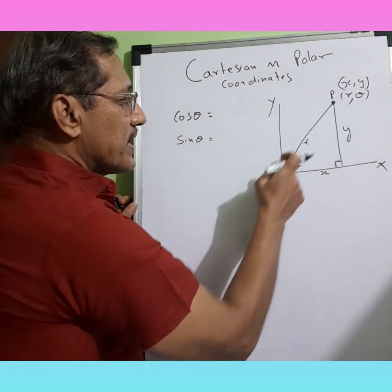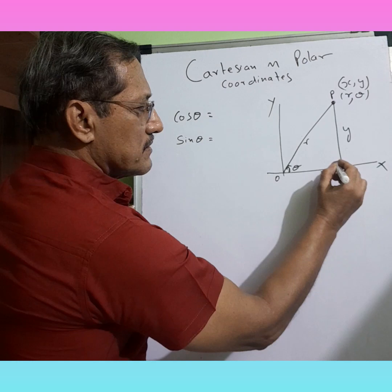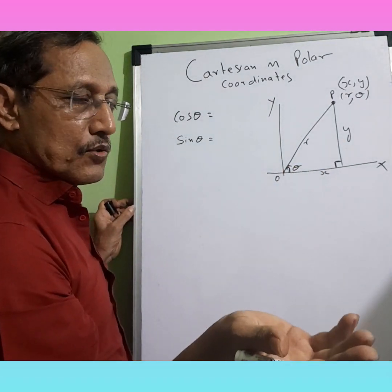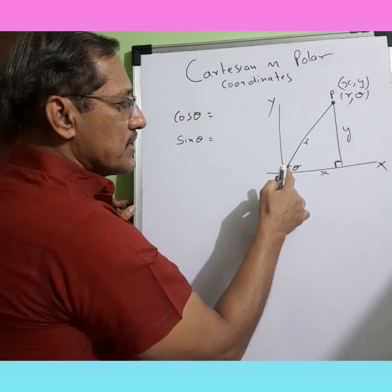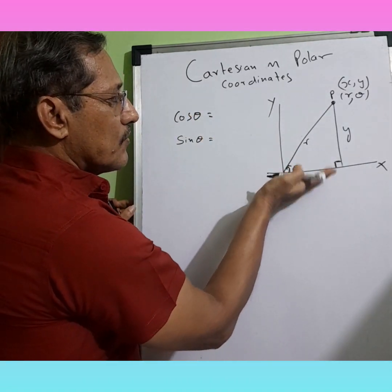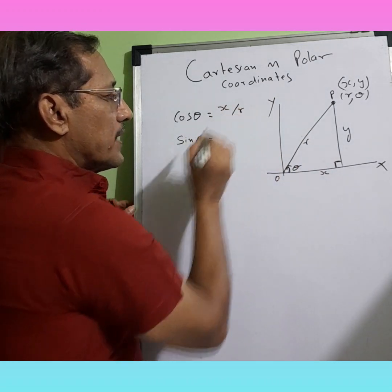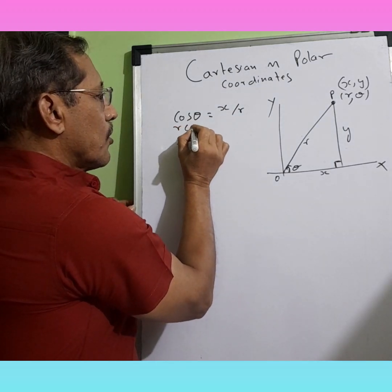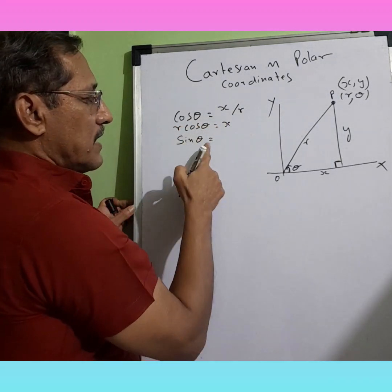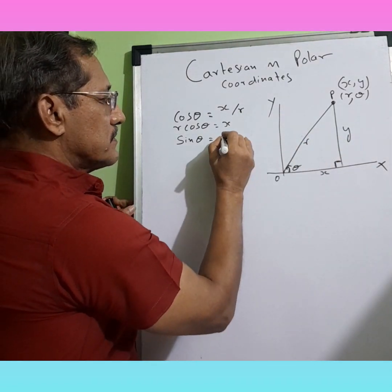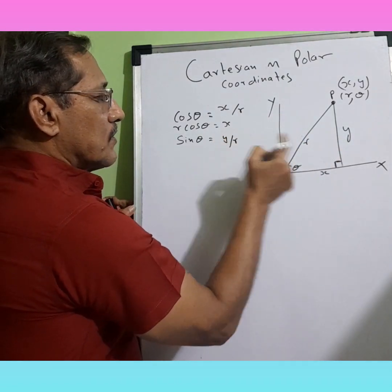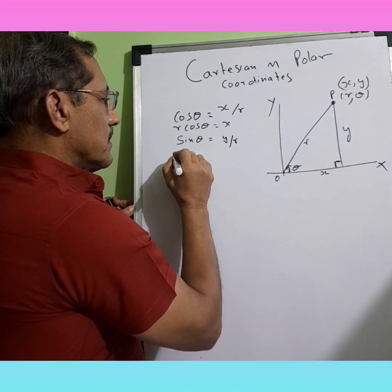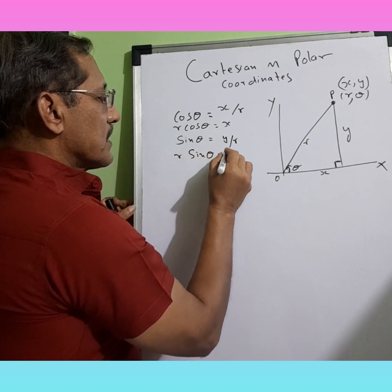Now, this is a triangle, right? Right angle, hypotenuse. Cos theta is equal to adjacent over hypotenuse, that is X by R. So X equals R cos theta. And sin theta is opposite over hypotenuse, so this would be R sin theta equals Y.